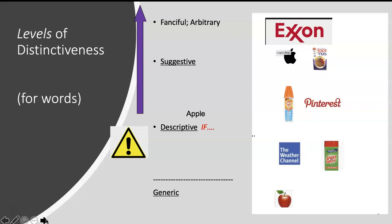The word Exxon is a made up word, so that is fanciful, whereas Grape-Nuts is arbitrary for the cereal that is not grape flavored or including any nuts.